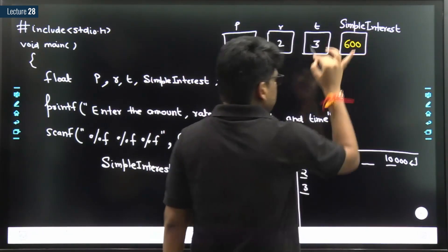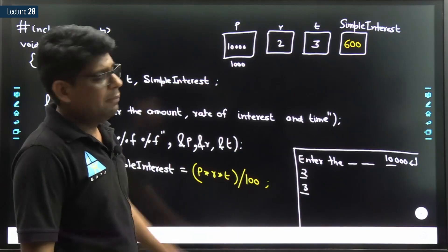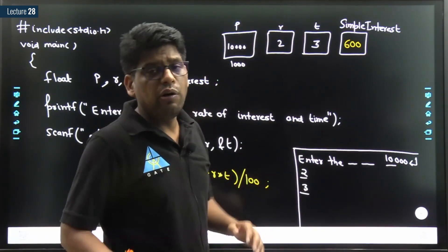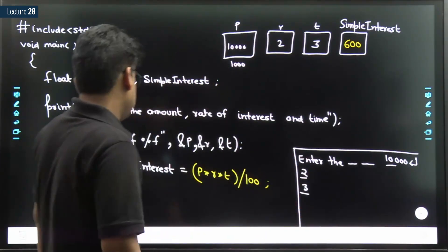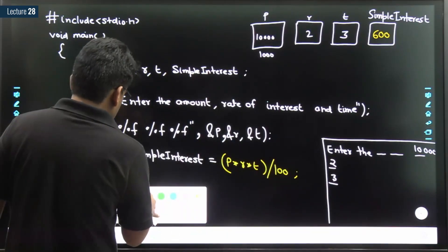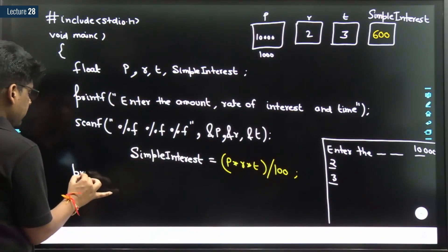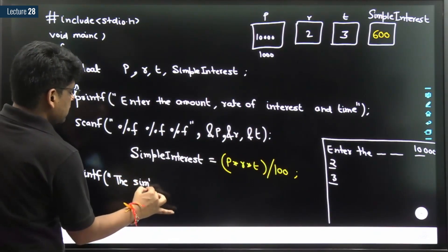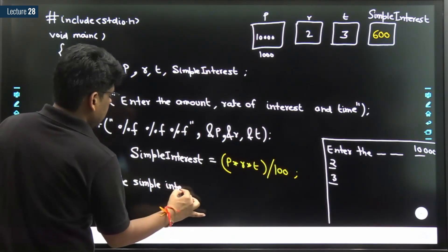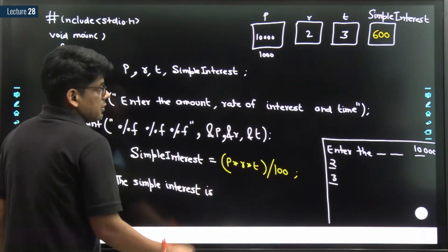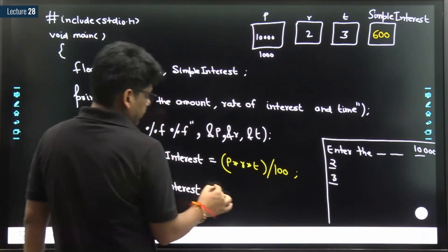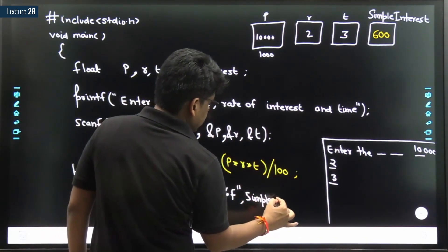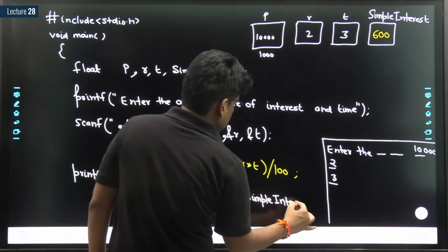Now the simple interest is calculated and resides inside the variable si. To print it, we use printf: printf("The simple interest is %f", si); This displays the computed simple interest to the user.